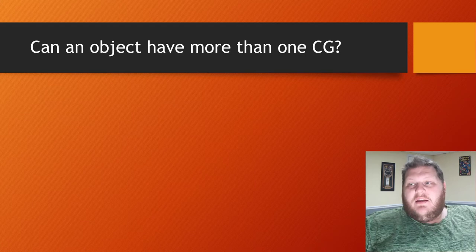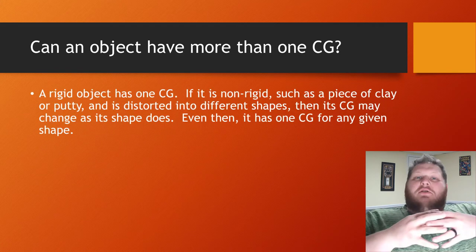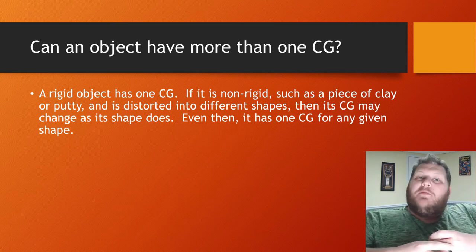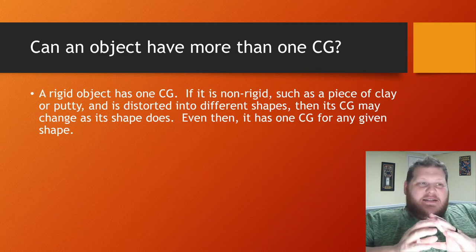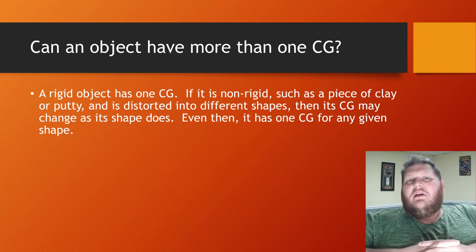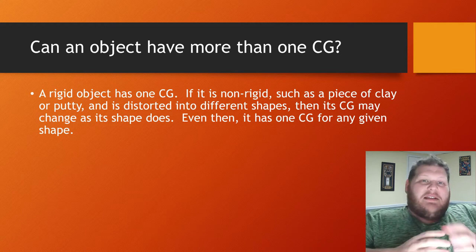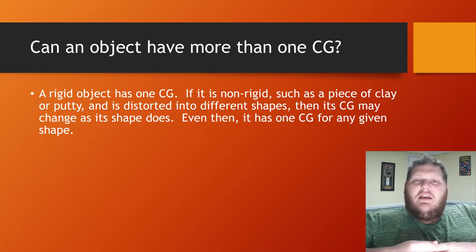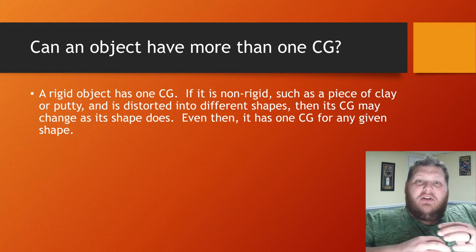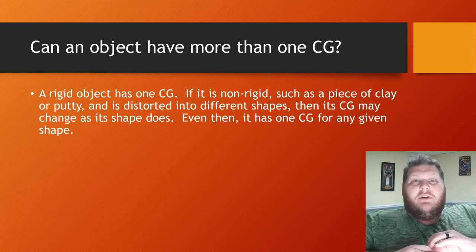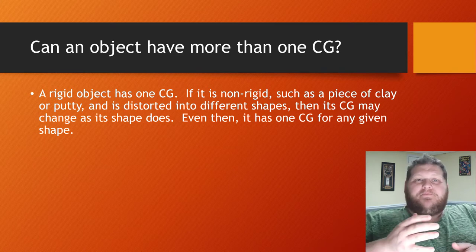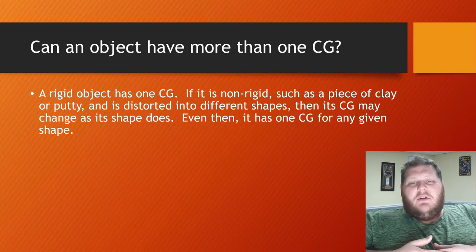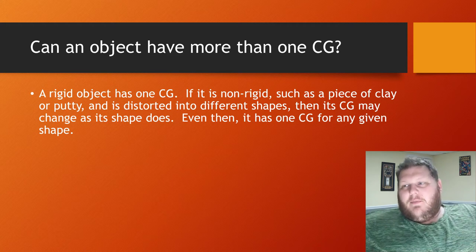Can an object have more than one center of gravity? For a rigid object — something with a set structure that is not malleable, flexible, or movable — you have just one center of gravity, a set spot where you can find the average of all that mass. For non-rigid objects like clay or play-doh, the center of gravity can shift around as the shape adjusts. But at any given time, you only have one center of gravity.